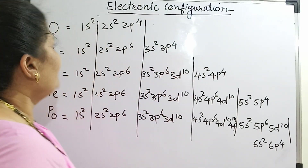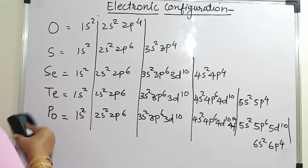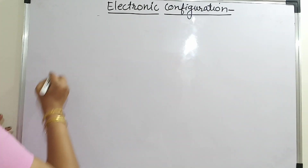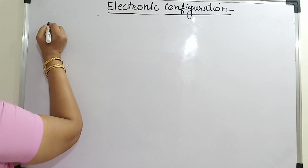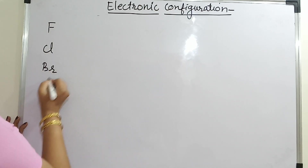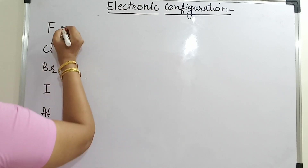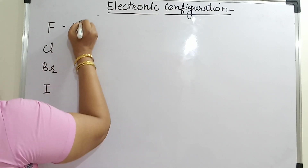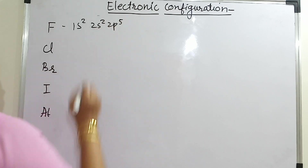Group 17 elements are fluorine, chlorine, bromine, iodine and astatine. For fluorine: 1s2, 2s2, 2p5.